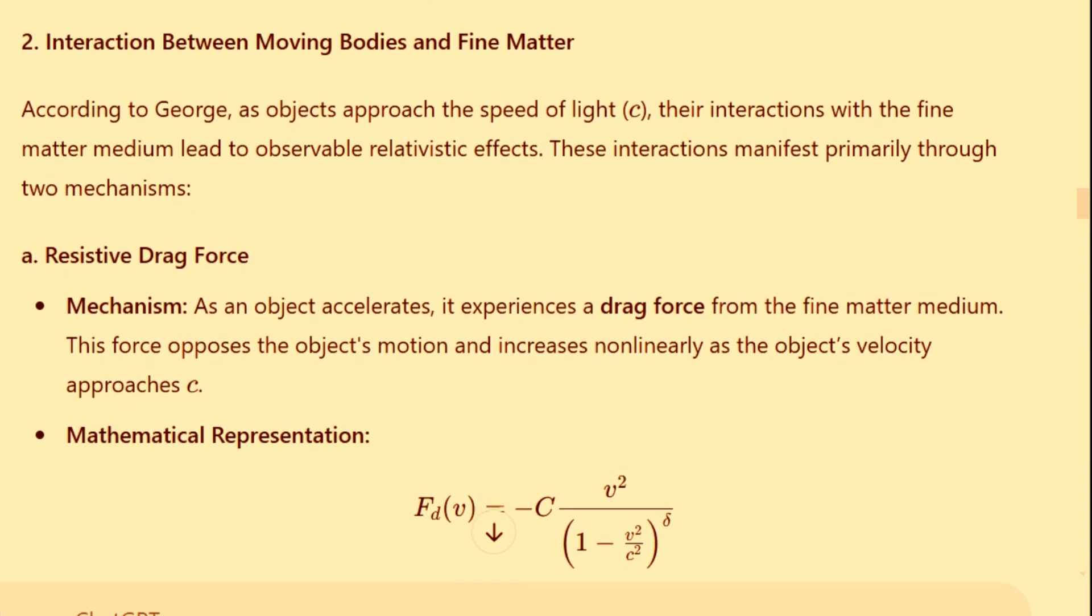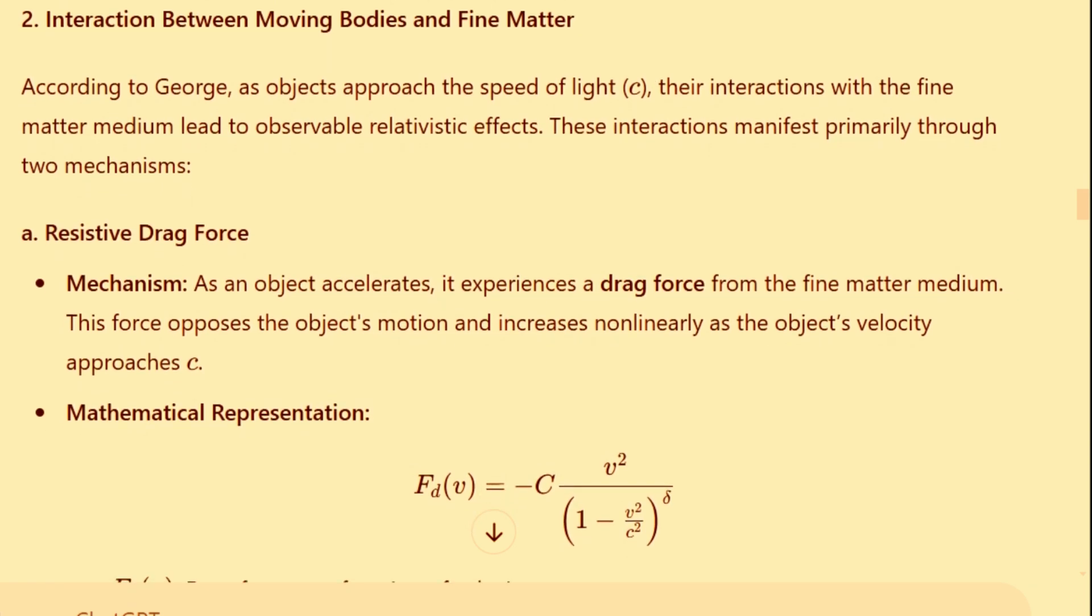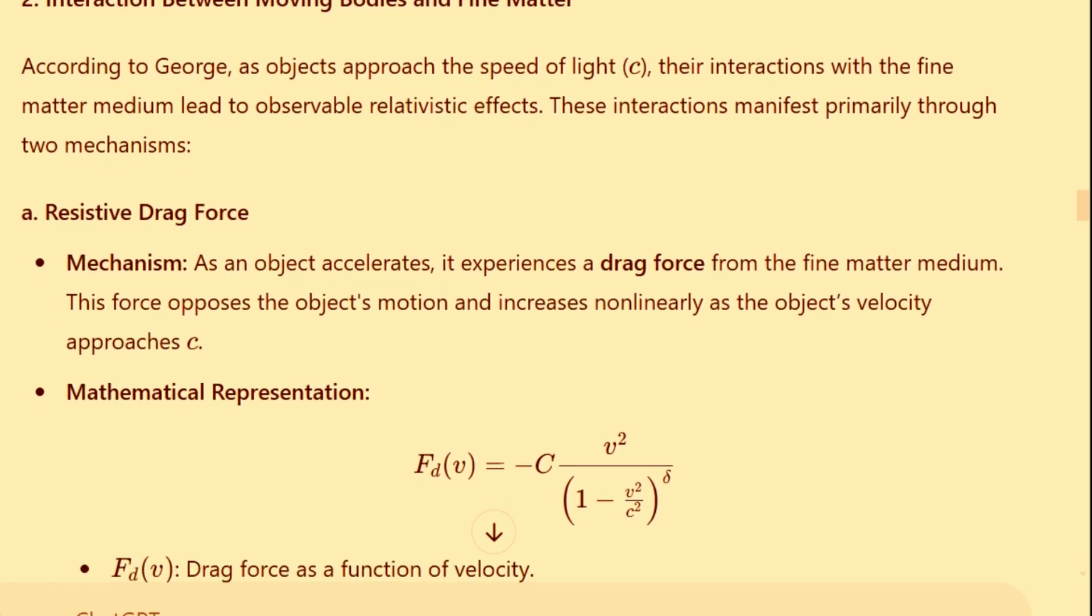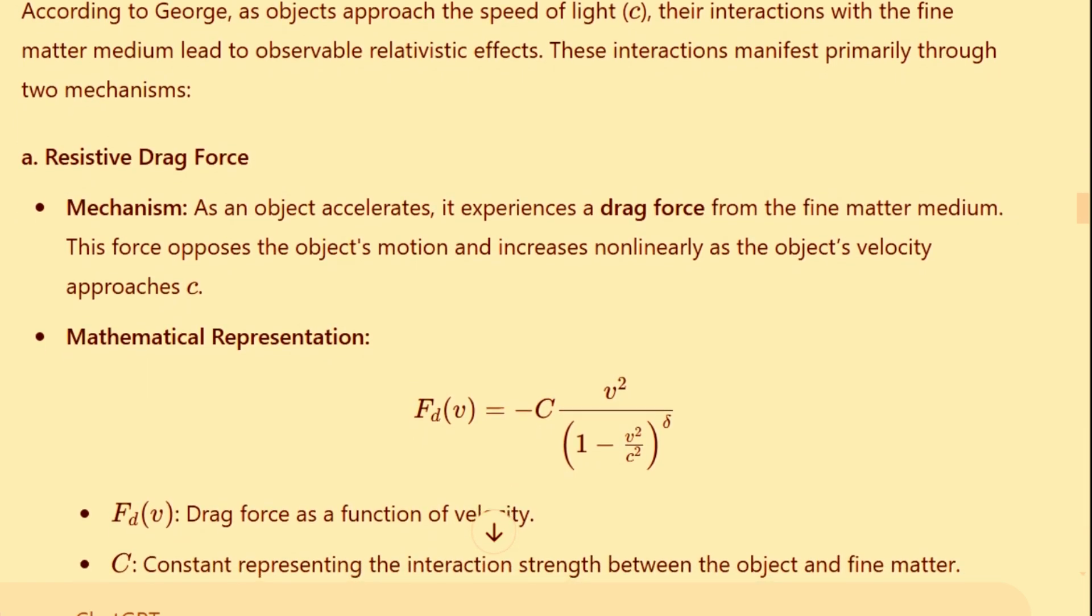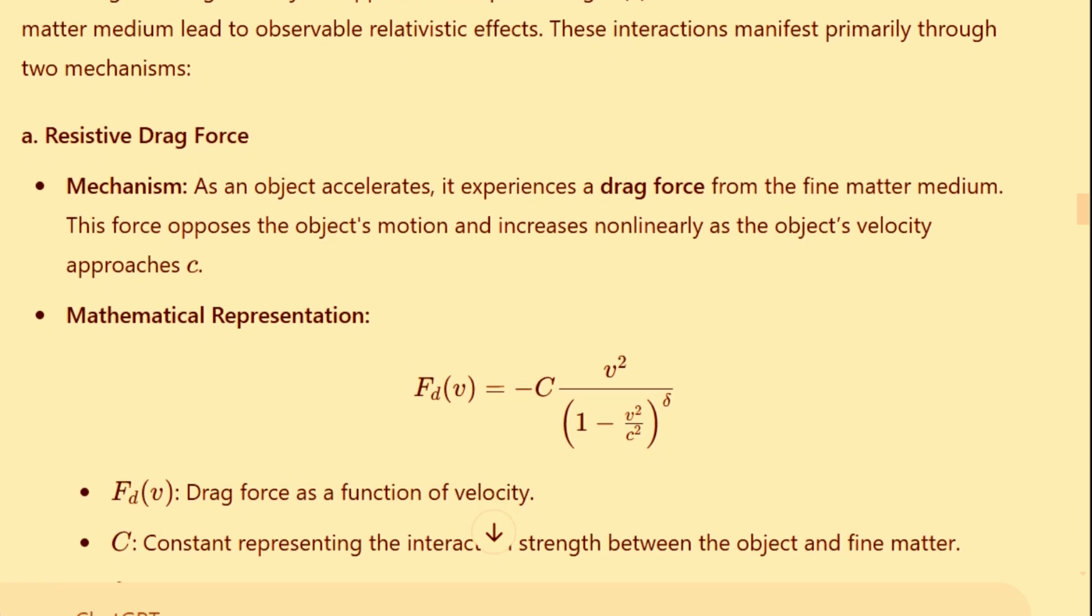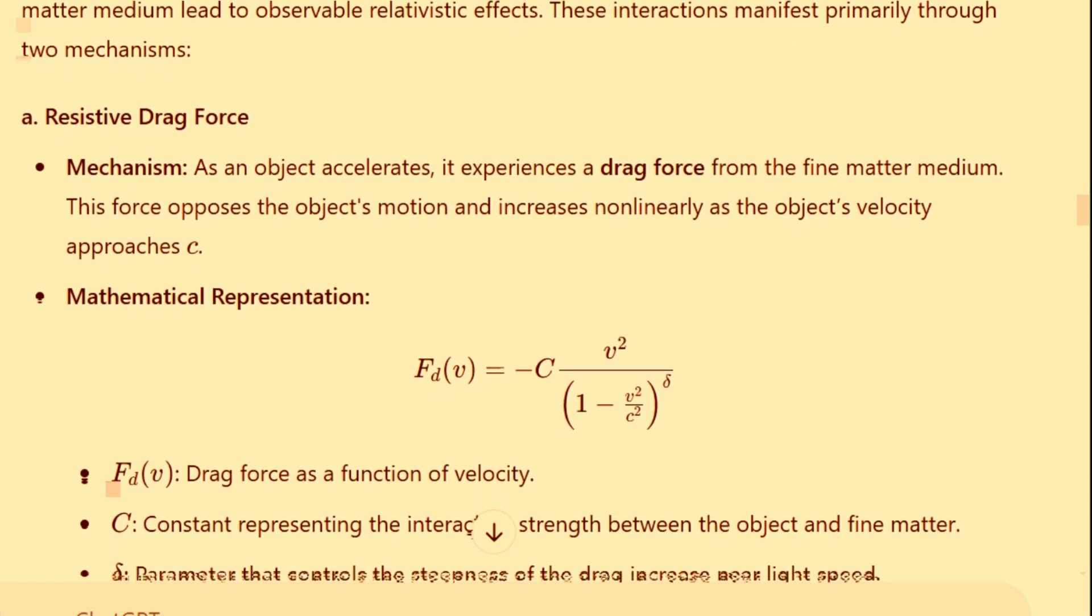2. Interaction between moving bodies and fine matter. According to George, as objects approach the speed of light, symbolized by lowercase c, their interactions with the fine matter medium lead to observable relativistic effects. These interactions manifest primarily through two mechanisms.